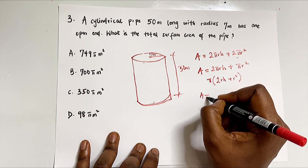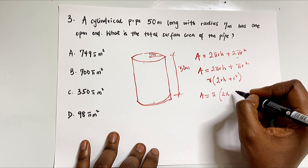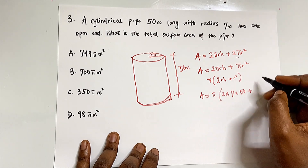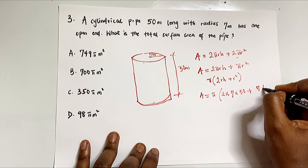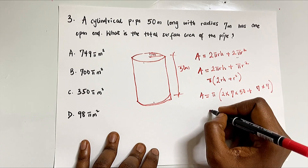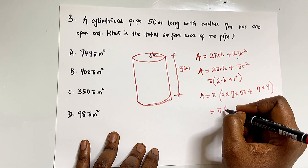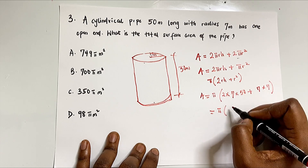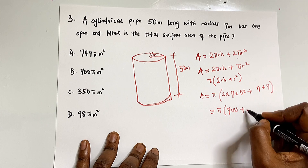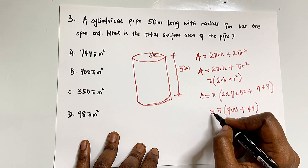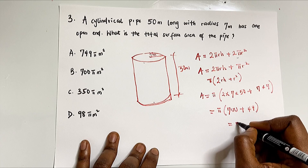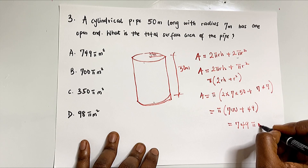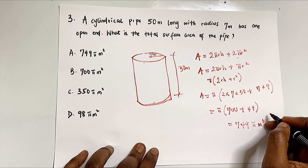Substituting our values: Area = π(2 × 7 × 50 + 7 × 7) = π(700 + 49) = 749π square meters. This gives us option A.